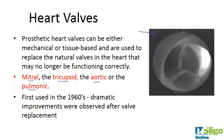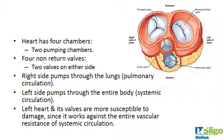The heart has four chambers: two pumping chambers and two return chambers, with two valves on either side — so four non-return valves in total. The aortic valve, for example, allows blood to be pumped into the aorta and around the body, and blood cannot flow back.